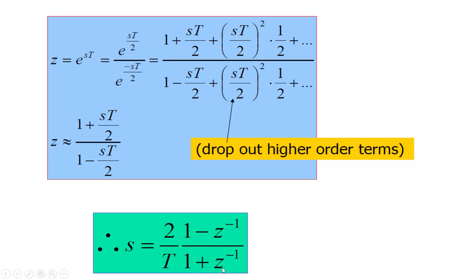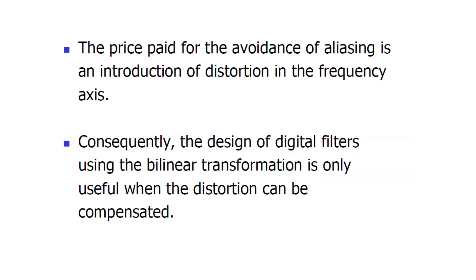In the analog filter transfer function, wherever s appears, we replace it with (2/T) * (1 - z^(-1)) / (1 + z^(-1)). The final transfer function obtained will be the digital filter designed using the bilinear transformation technique from its analog counterpart.